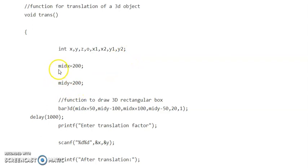Then we are initializing the value of midx and midy. That is midx equals to 200, midy equals to 200. Then next, that is your particular function to draw 3D rectangular box. Earlier we have studied bar 3D function is used to draw rectangular box in a 3D format. So that is your bar 3D function.